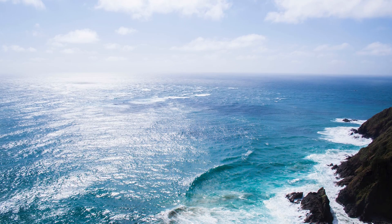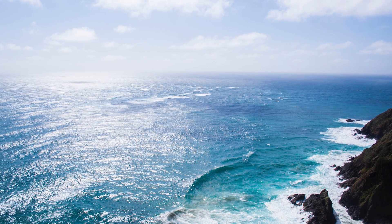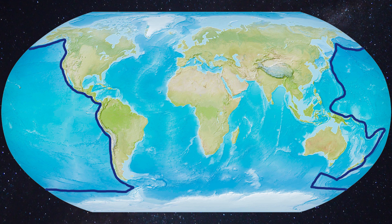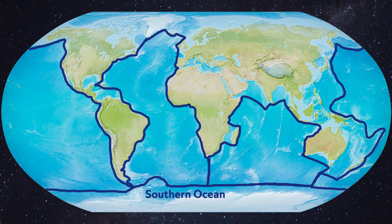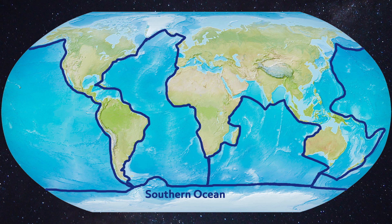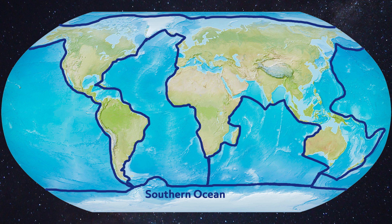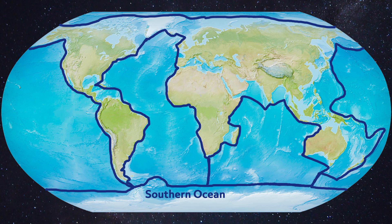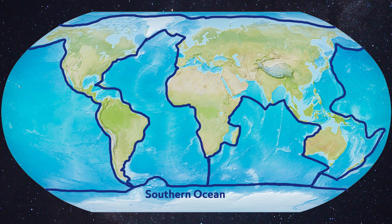Let's start with the big ones: oceans. Composed of salt water, they cover 70% of the Earth's surface and, in reality, are one world ocean that we've broken up into five smaller divisions. They are, in descending order by size: the Pacific, Atlantic, Indian, Southern or Antarctic, and Arctic. These are what we might term political or horizontal divisions, rather than physical or biological vertical divisions.